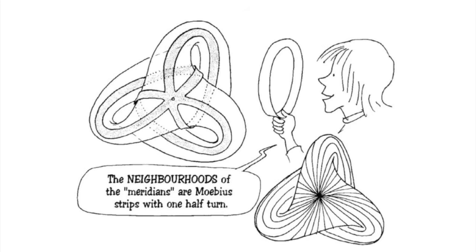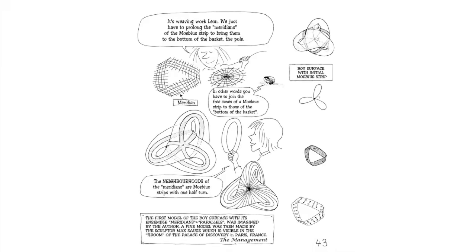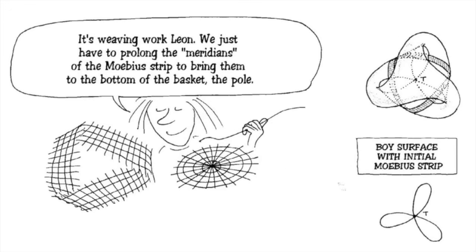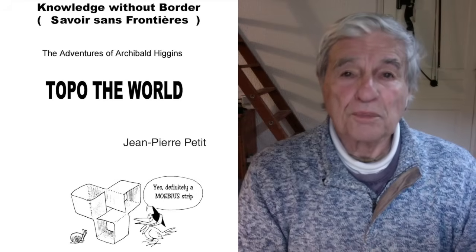What about the three-half-turn Möbius strip? No problem — there it is on the right. The Boy surface is a closed surface, but it has a self-intersection curve. This curve is shown on the lower right, and there is a triple point. You will find a full description of this Boy surface in my album Topology of the World.